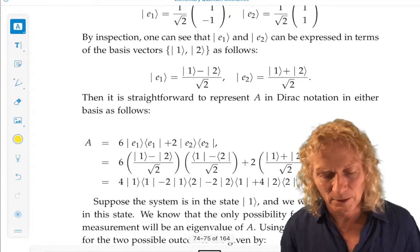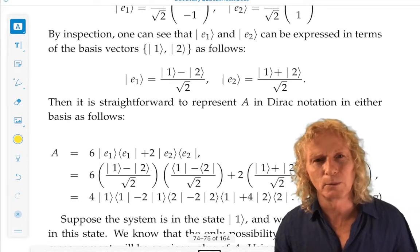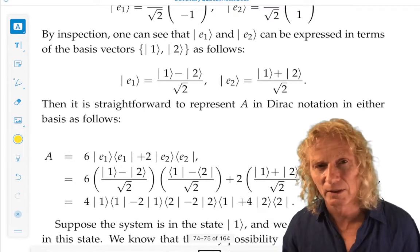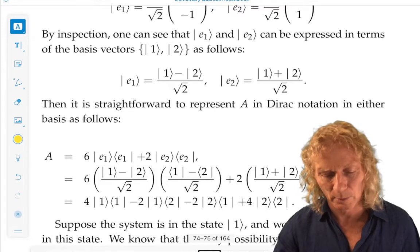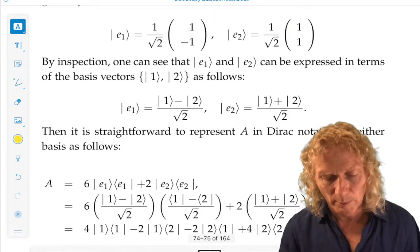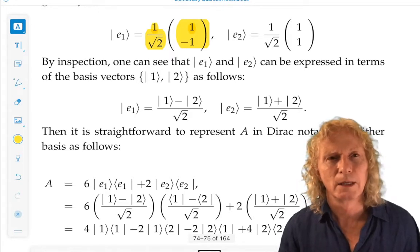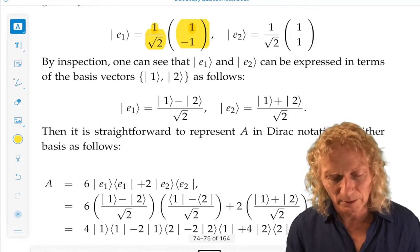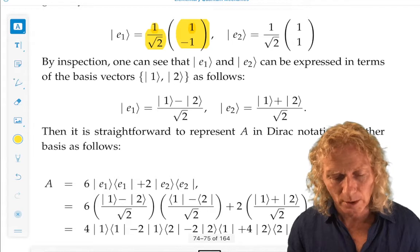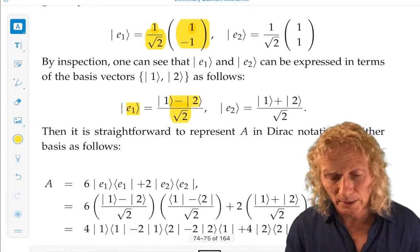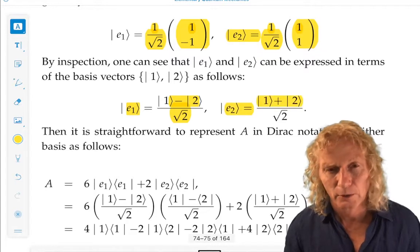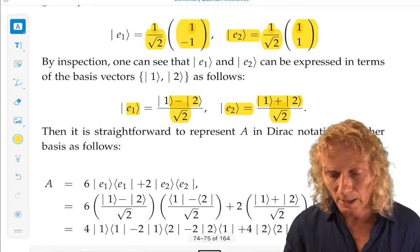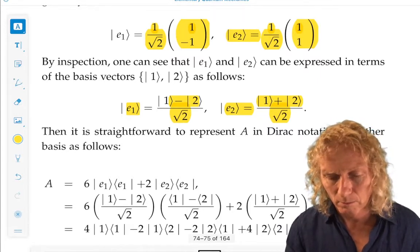When you had linear algebra, you learned about change of basis, and you probably learned it in n dimensions, and it was a lot of indices and so on. But in this case, it's very simple. You can do it in your head in this 2 by 2 example. Remember what the matrix—ket 1 is column vector (1,0), ket 2 is column vector (0,1). You can easily check that ket E1 is equal to this expression, and ket E2 is equal to this expression. So, check this yourself carefully, and make sure you understand how I go between these two.